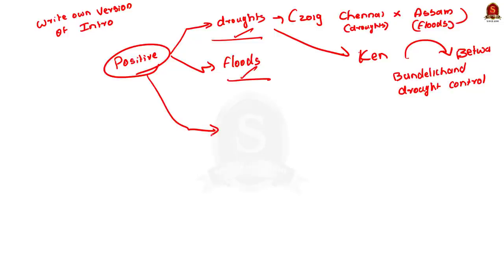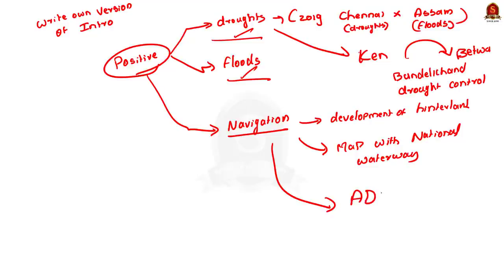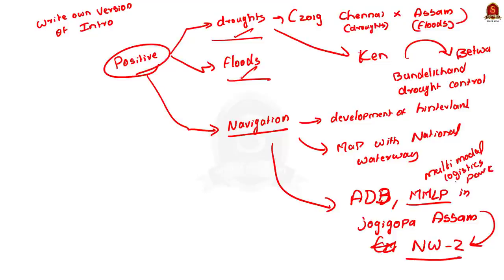Moving on to how interlinking of rivers will help inland waterways and ensure development of the hinterland — here you can draw a map highlighting national waterways and mention how interlinking could increase the navigation potential of rivers. For the northeast region, you can link current affairs: the Asian Development Bank recently supported a pre-feasibility study for a multimodal logistic park in Jogigopa, Assam, incorporating rail, road, and inland waterway connectivity along National Waterway 2. This addresses all three keywords: floods, droughts, and navigation.